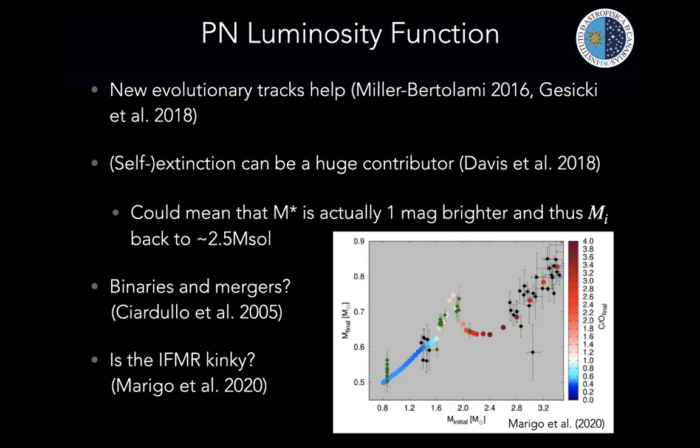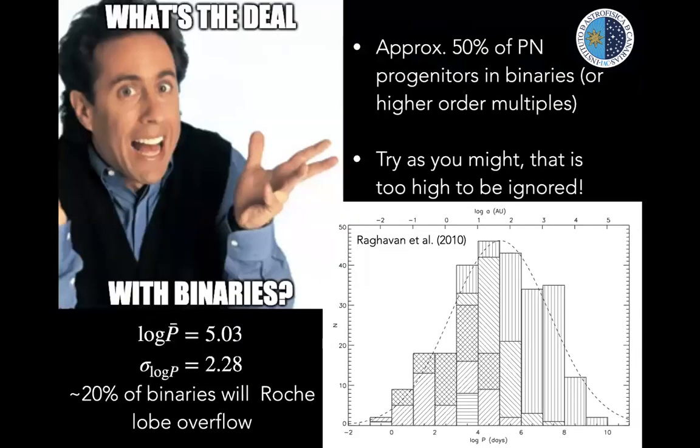One possibility is that this is driven by binarity and mergers of lower-mass stars producing higher-mass stars even in old populations — though maintaining a steady supply of merging intermediate/low-mass stars is problematic. Another potential resolution is that the initial–final mass relation is not quite right and lower-mass progenitors can produce high-mass remnants that are very luminous, leading to this bright cutoff. So: is the initial–final mass relation 'kinky', with a large peak in the 1–2 solar mass range?